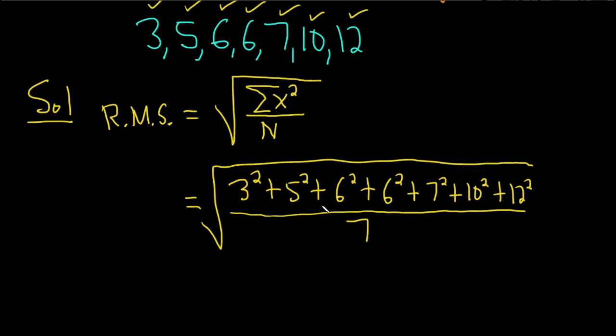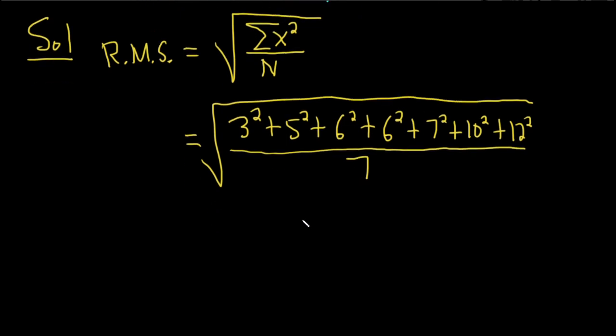So my calculator says 399, wow, that's a big number. This is the square root of 399 divided by 7. And if you divide that by 7, you get 57, so we get the square root of 57.